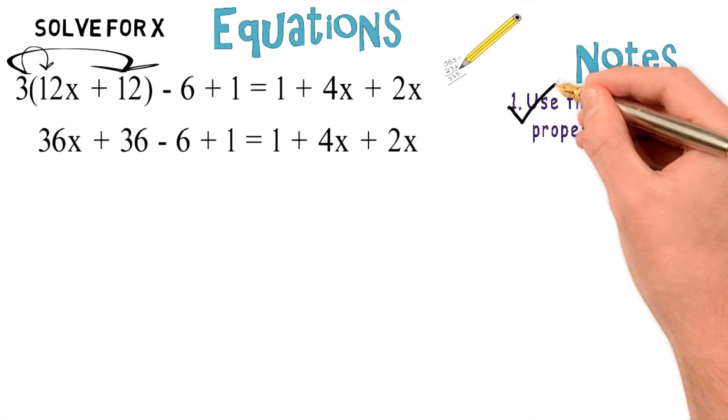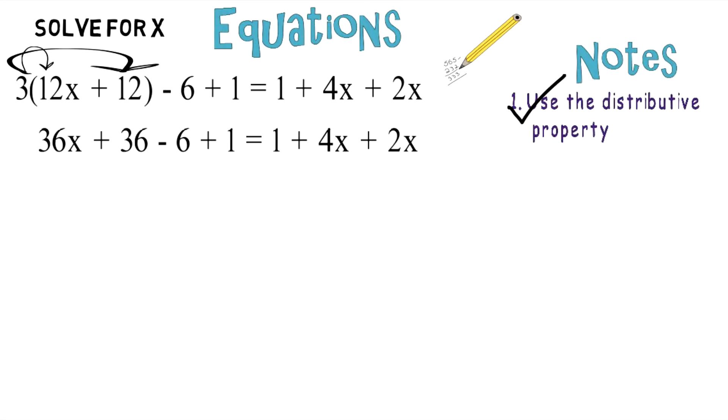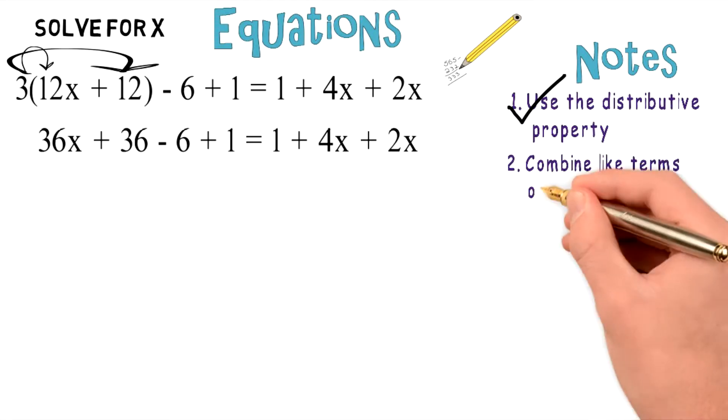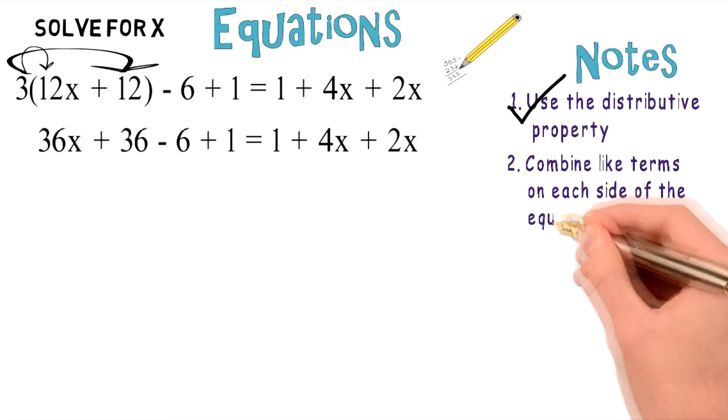You can check off step 1 and move on to step 2, which is to combine like terms on each side of the equation.